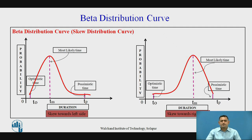The beta distribution curve is a skewed distribution curve. Unlike the normal distribution curve which is symmetric at its apex or center, in the beta distribution curve the curves are skewed to the left-hand side as well as the right-hand side.